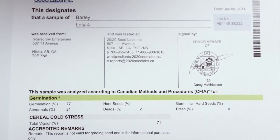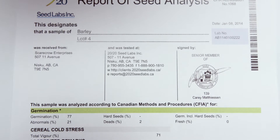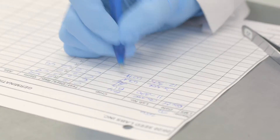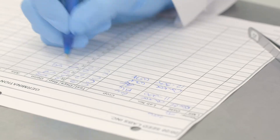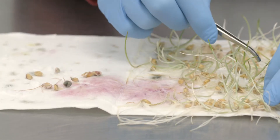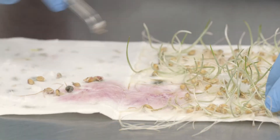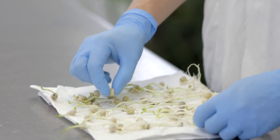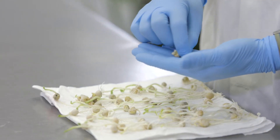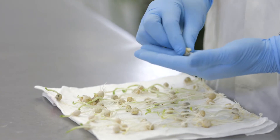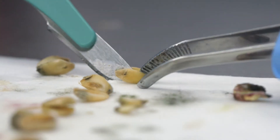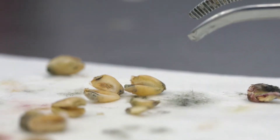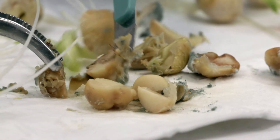The report of seed analysis states the percentage of normal seedlings that are capable of developing into healthy plants in the field. Also, abnormal seedlings that have one or more damaged or missing structures are counted. Because dead and fresh seeds often have similar symptoms externally, they need to be assessed by cutting them in half with a scalpel to see if the embryo is viable.